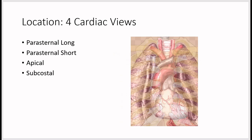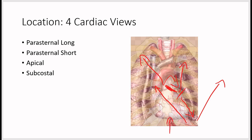There are four cardiac windows: parasternal long, parasternal short, apical, and subcostal. For parasternal long, the probe marker points toward the patient's right shoulder. For parasternal short, rotate 90 degrees clockwise so the marker points toward the patient's left shoulder. For apical, slide the probe to the apex with the marker toward the patient's left shoulder. For subcostal, place the probe below the substernal area with the marker pointed toward the patient's left side.